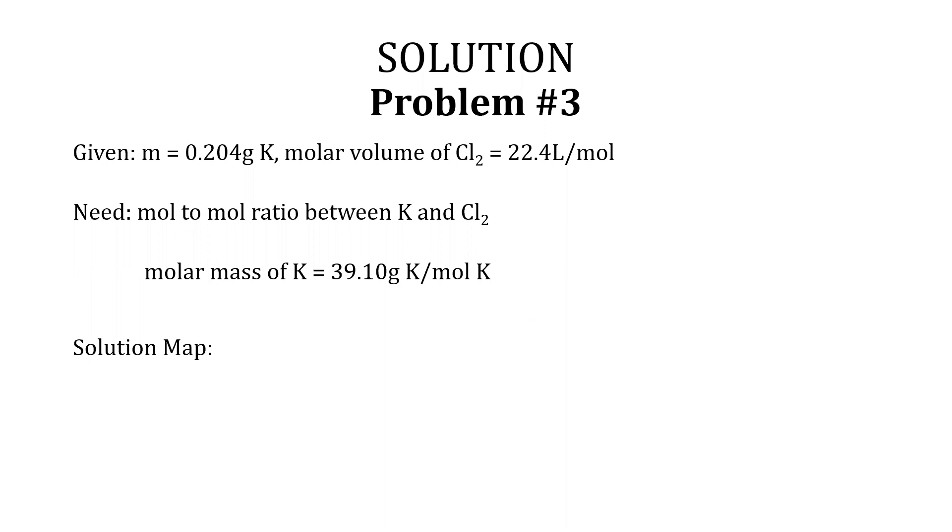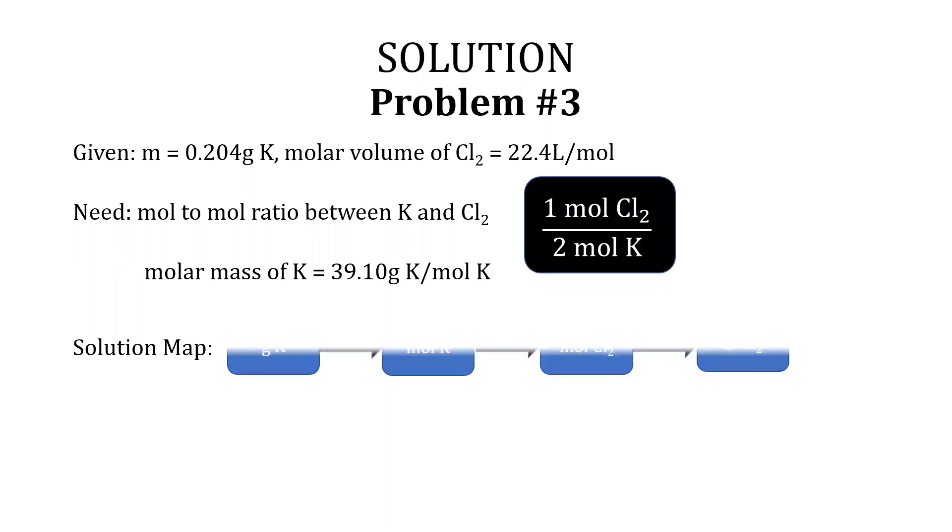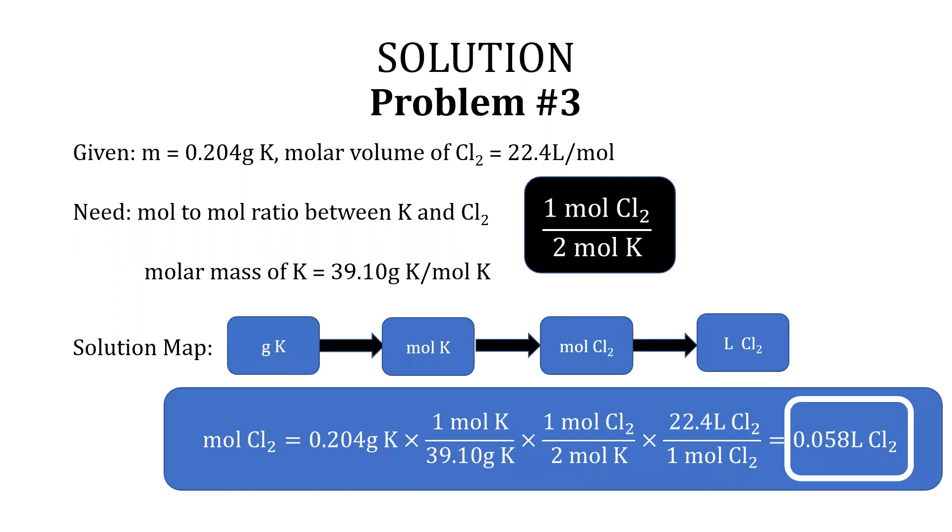The solution map starts with grams of K and divides by the molar mass of K to get moles K, then multiplies by the mole ratio, which is 1 mole of Cl2 over 2 moles of K, to get moles of Cl2, and lastly multiplies by the molar volume of Cl2 at STP, which after plugging all numbers equals 0.058 L of Cl2.